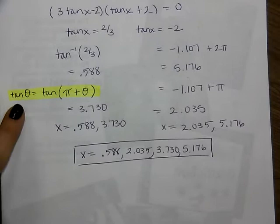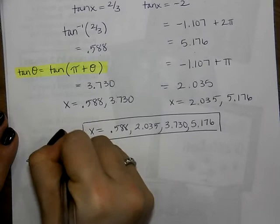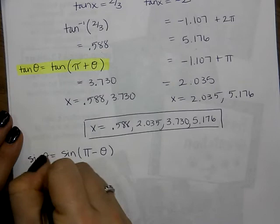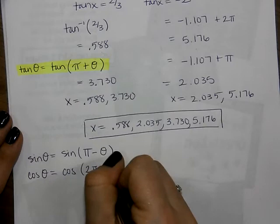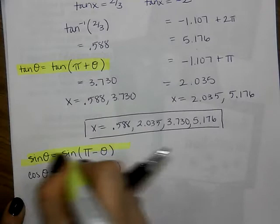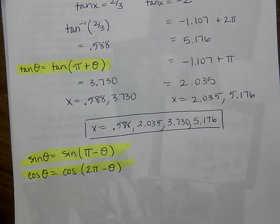Here are the rules for finding second angles: sine of θ equals sine of (π − θ), and cosine of θ equals cosine of (2π − θ). These were rules from chapter 4 that you may have forgotten.